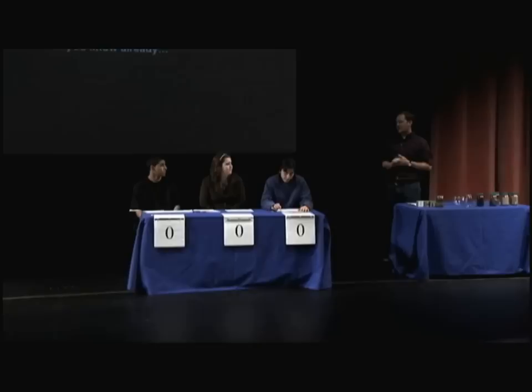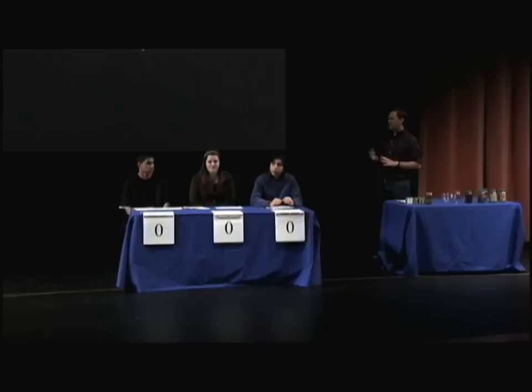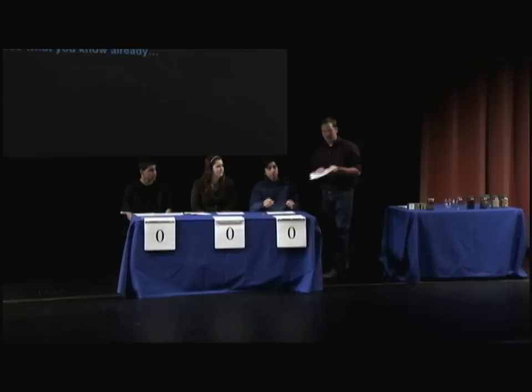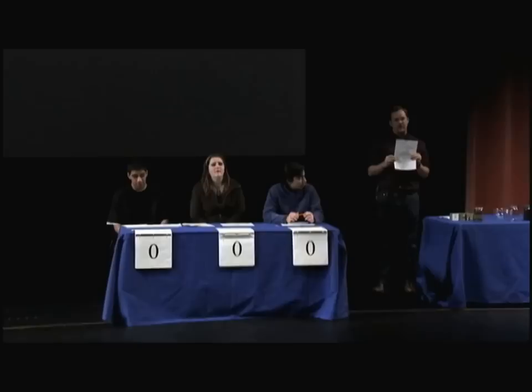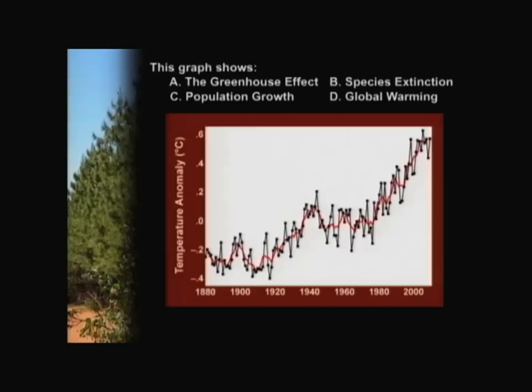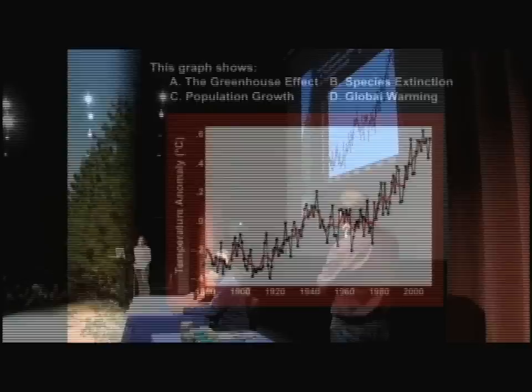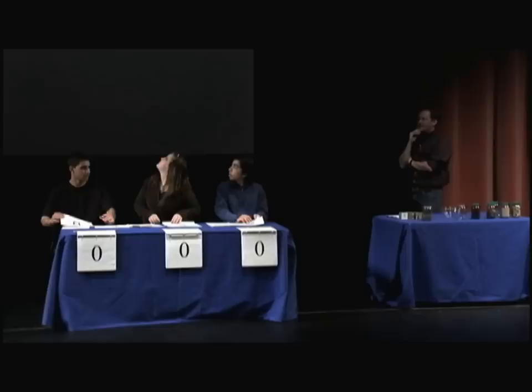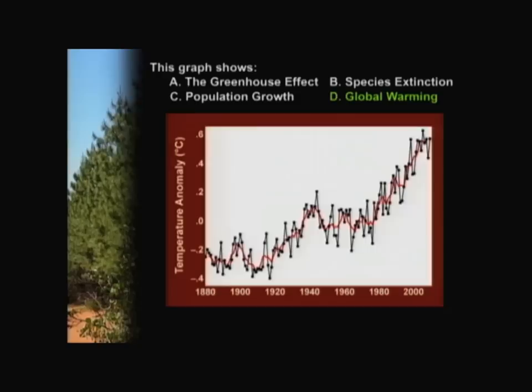These are three students from Tracy High School: Shubat Singh, Tara Chase, and Arpeet Singh. They're going to be playing Jeopardy. You can play right along — the three questions are on your student notes, so go ahead and participate. The first question is: what does this graph show? A, the greenhouse effect; B, species extinction; C, population growth; or D, global warming? Good job — D, global warming.